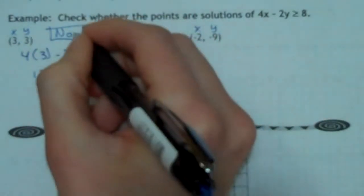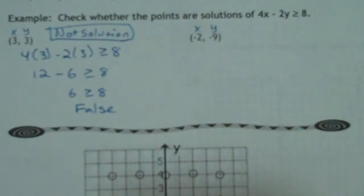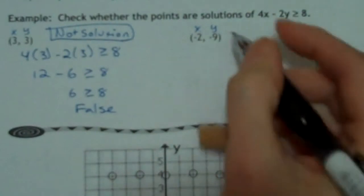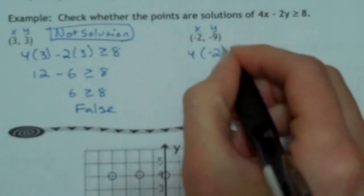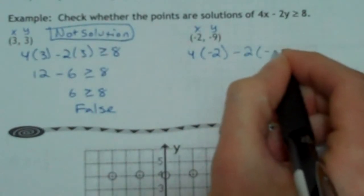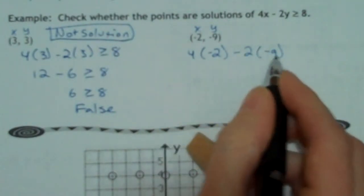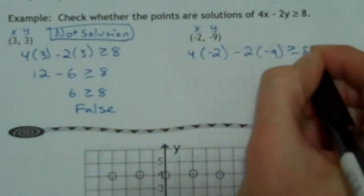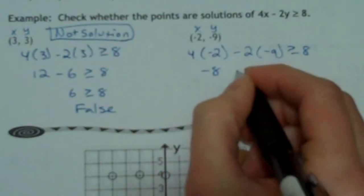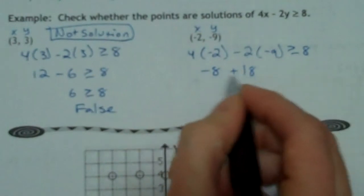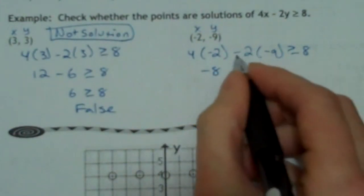Same thing over here. So we do 4 times negative 2, minus 2 times negative 9. So that's x and that's y. Is greater than or equal to 8. 4 times negative 2 is negative 8. Negative 2 times negative 9 is positive 18. So pay attention to your sign there. It should be a plus, negative times a negative.